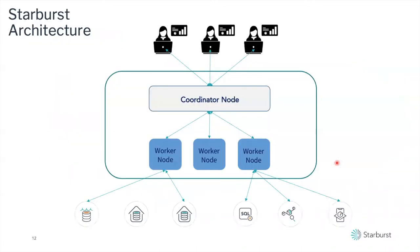The system ends up looking like this: we have a cluster in the middle which has a coordinator node and multiple worker nodes. The workers can be expanded — you can actually have more worker nodes, and by adding more you get more concurrency. You also get more and faster response time, so you can deal with more data and you can get the data faster.